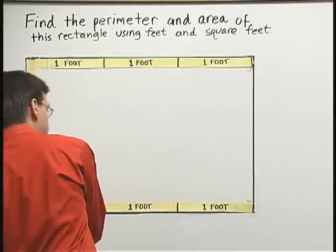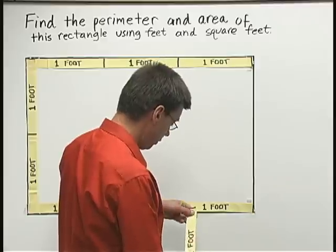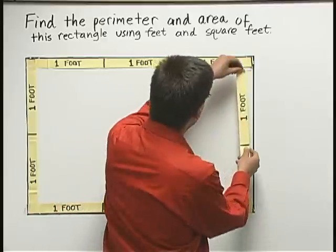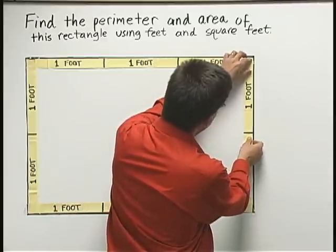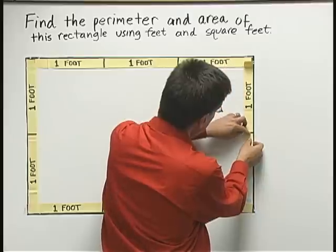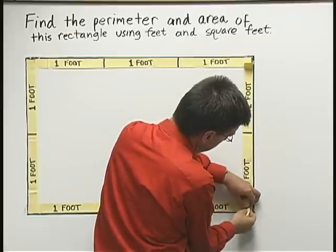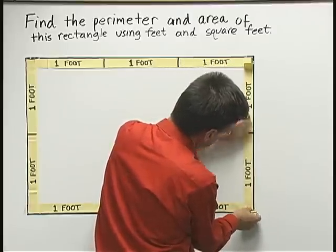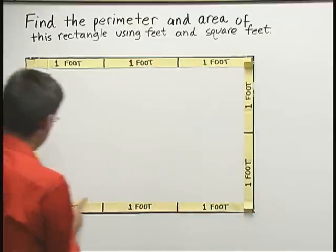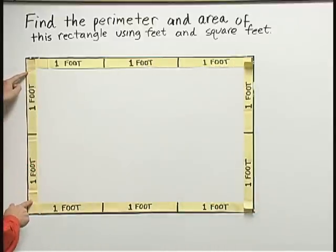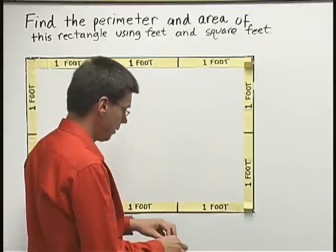Now we have one more side to measure. Coming down this side, I have one foot and a second foot. And of course, this side and this opposite side both have the same measure — they're both two feet long.